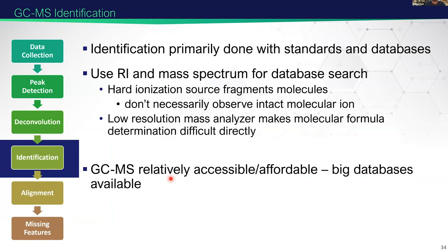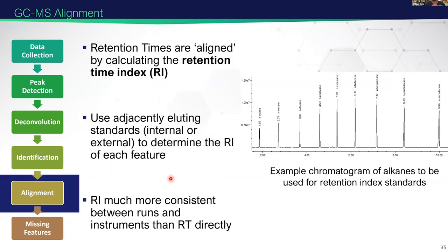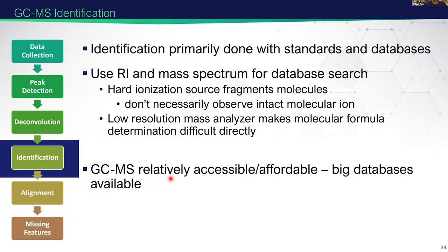In GC-MS, alignment is converting our retention time to a retention time index. We essentially calibrate our retention time against internal or external standards — alkanes or fatty acid methyl esters are injected and elute off the column at known reproducible times. We can then normalize the measured retention time of our real compounds to those measured reference points. This allows you to get much more consistent retention indexes than you would from retention time alone. For identification, we do this with standards and databases, looking up fragmentation patterns, doing similarity searches, and finding the right matches.